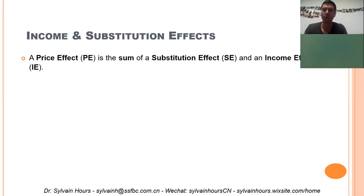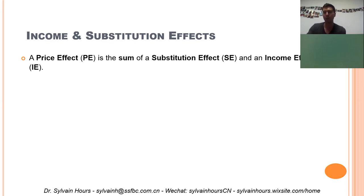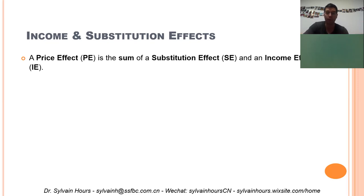When the price of one good changes, there is also a consequence on your purchasing power, because your money income has not changed but your real income — the purchasing power of your money income — has changed. If the price has increased, your purchasing power has decreased. In this case, are you going to buy more or less of good X? It depends on whether good X is a normal good or an inferior good. If your purchasing power decreases and good X is normal, you will buy less. But if your purchasing power decreases and good X is inferior, you will buy more according to the income effect. So the substitution effect is about the change in relative prices, and the income effect is about the change in purchasing power.